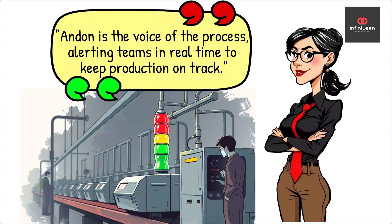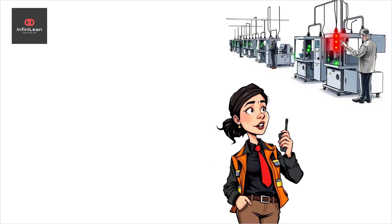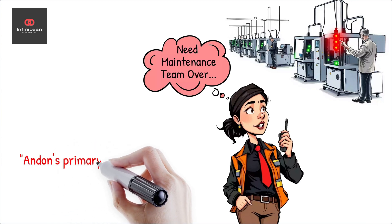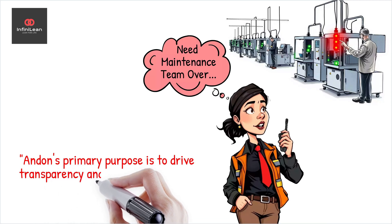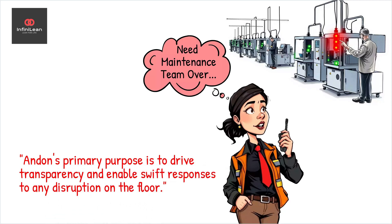When a problem arises, an Andon signal activates, prompting immediate attention and action. The primary purpose of Andon is to enhance transparency and ensure rapid response to disruptions. It empowers employees on the shop floor by giving them the authority to signal problems without delay. This proactive approach helps maintain quality and productivity while minimizing downtime.